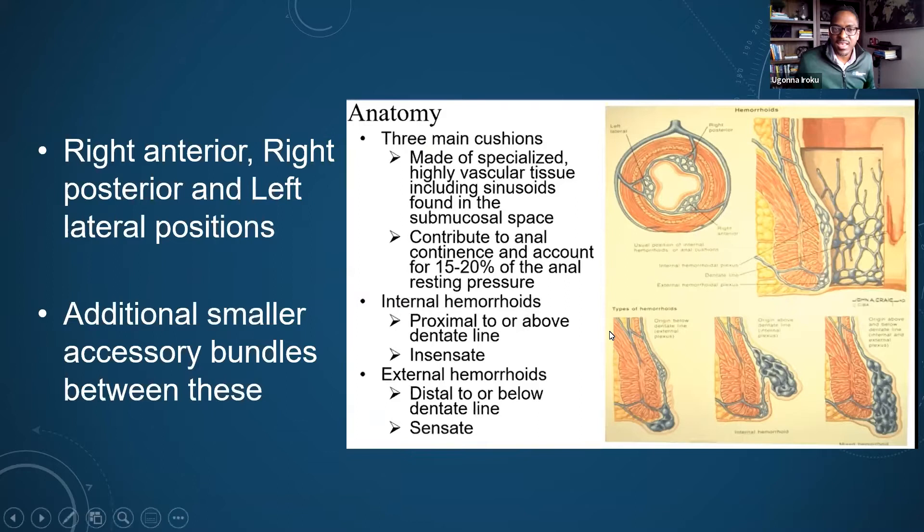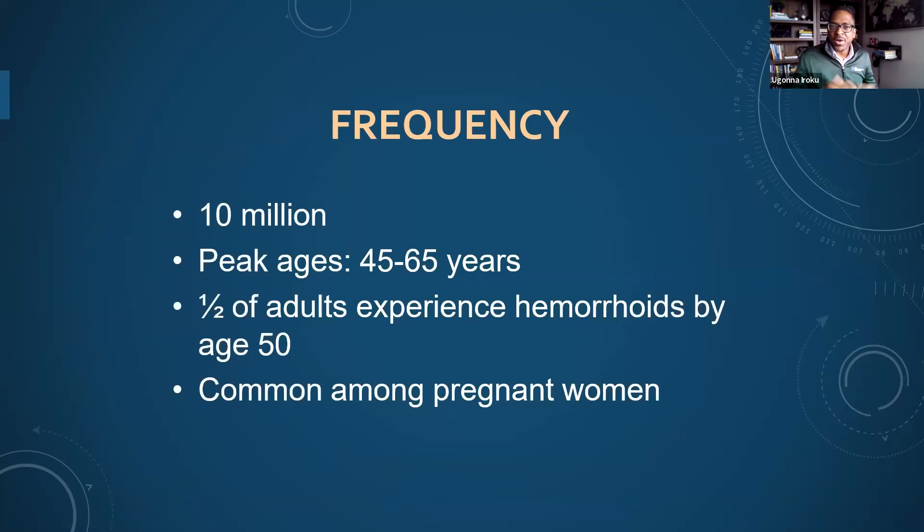About 10 million of us will have hemorrhoids. Peak ages are 45 to 65. The stats show that for adults 50 years or older, you're 50% likely to have hemorrhoids. It's very common amongst many stages of life, including pregnancy as well.